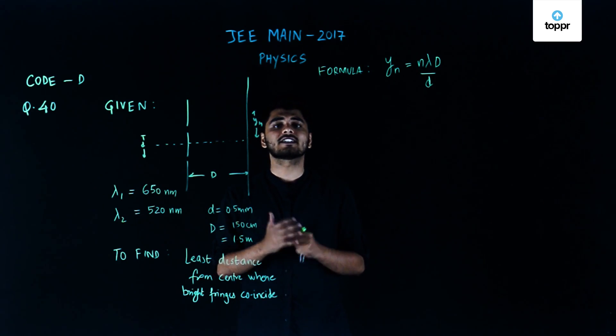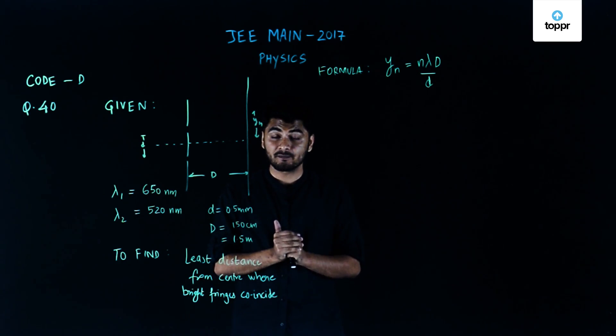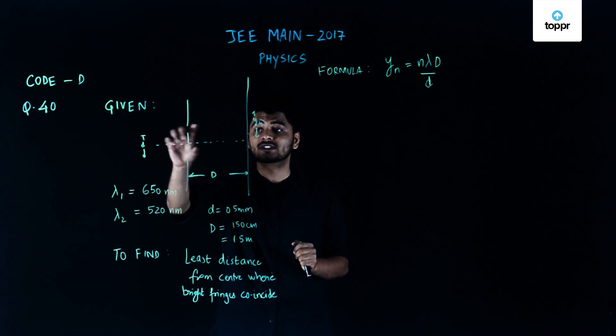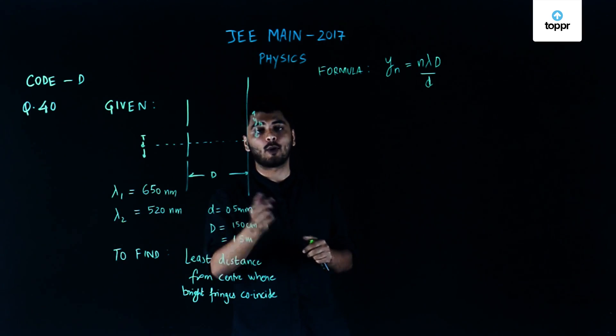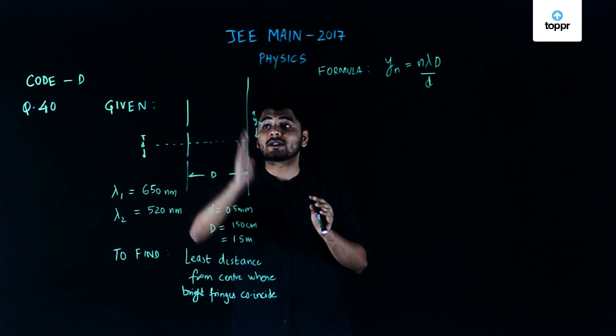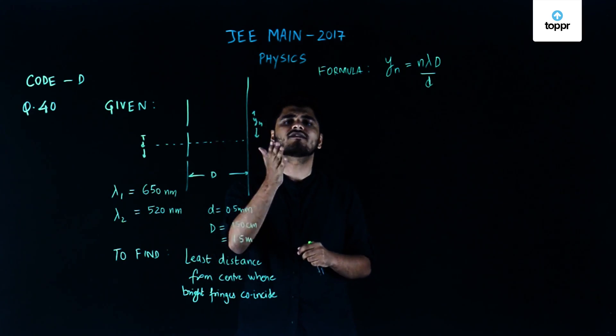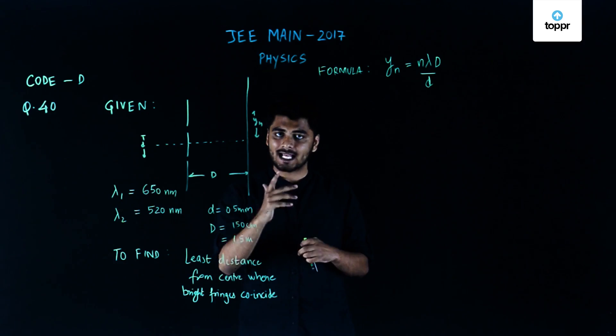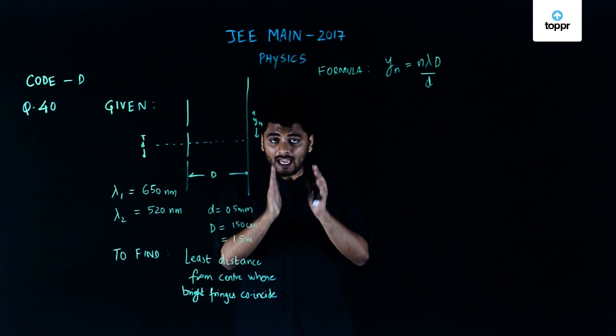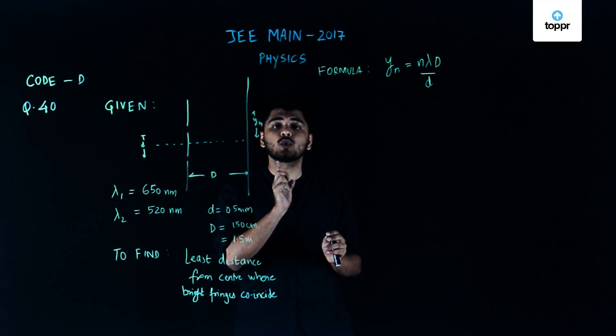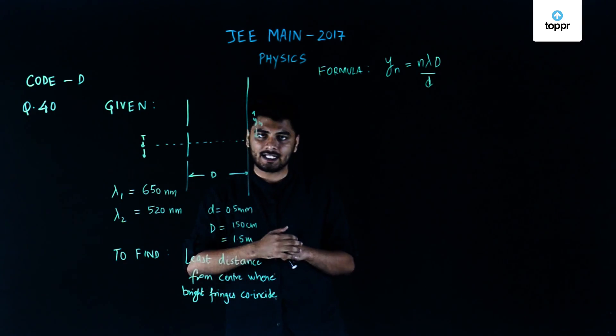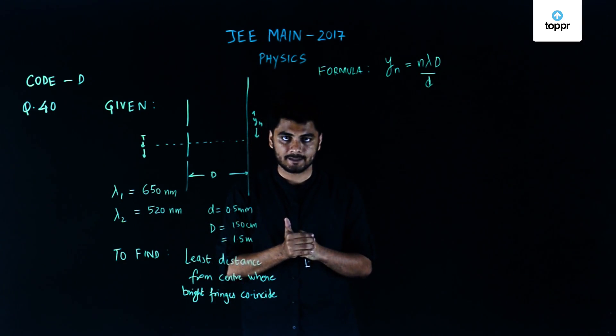We have been given a Young's double slit experiment setup in which the distance between the two slits is 0.5 mm and the distance between the slits and the screen is 1.5 meters, that is 150 centimeters. We are using light which consists of two different wavelengths: first is 650 nanometers and the second is 520 nanometers.